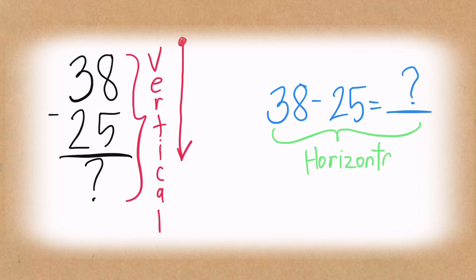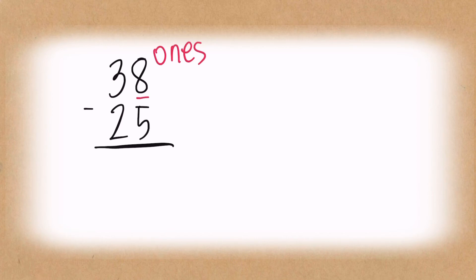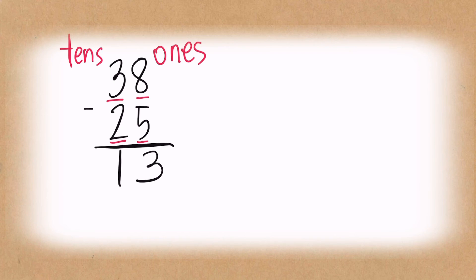When we say horizontal, we usually write the numbers from left to right. Now the next question is: how are we going to solve it? Let me tell you more. Using the vertical number sentence for 38 minus 25 — we always begin with the ones place: eight minus five gives you three. Now let's proceed to the tens place: three minus two gives you one.